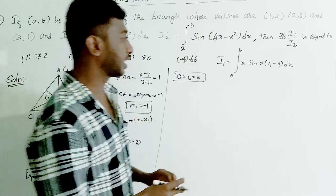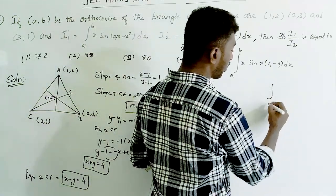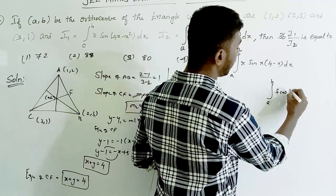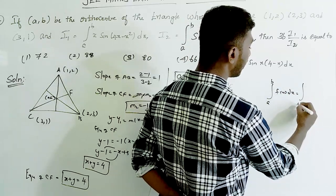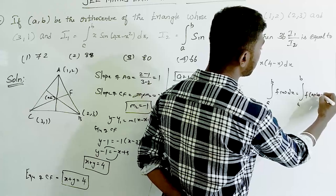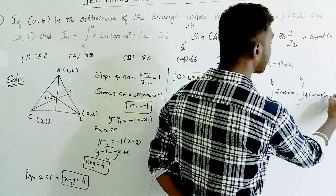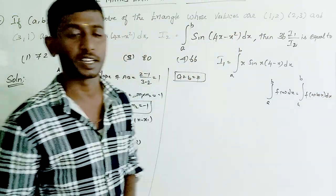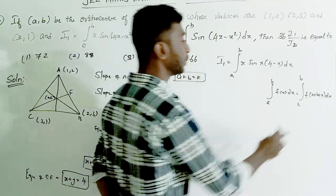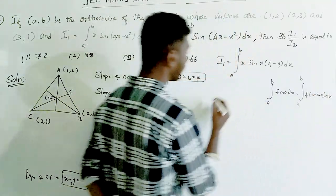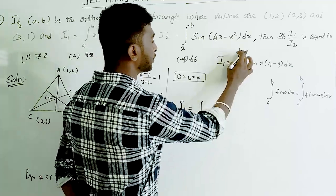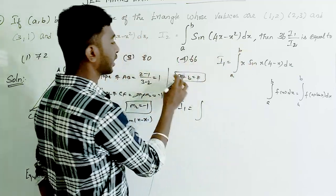We apply the property: ∫ from a to b of f(x) dx = ∫ from a to b of f(a + b - x) dx. Substituting (a + b - x) in place of x, and since a + b = 4, we replace x with (4 - x).